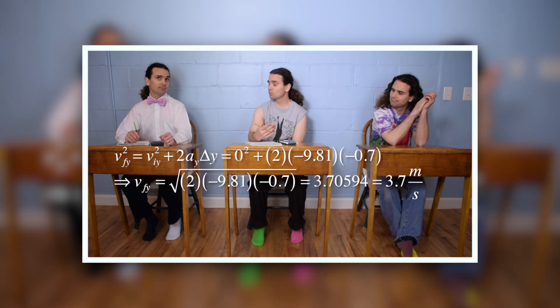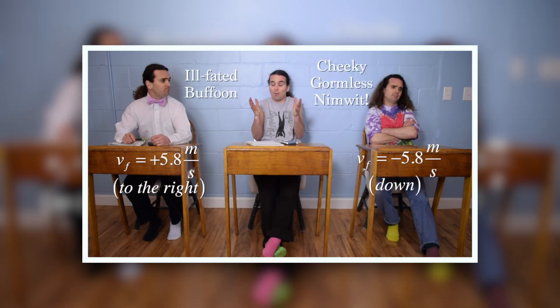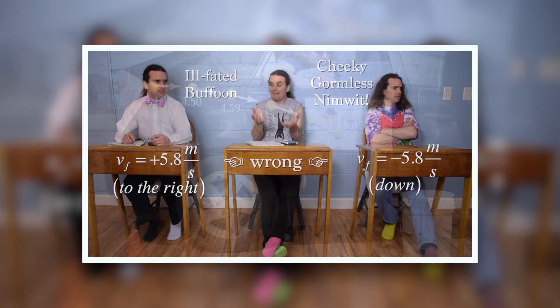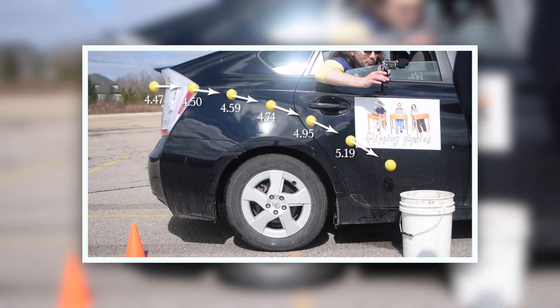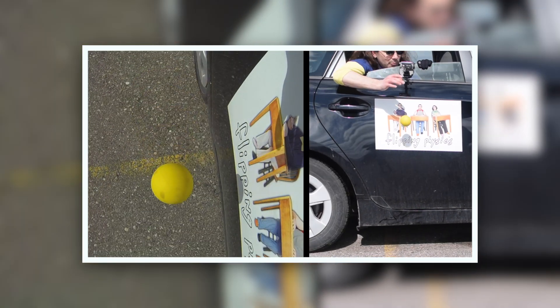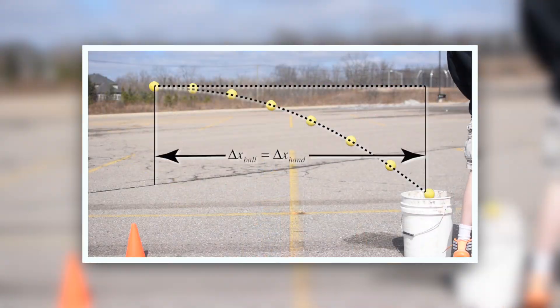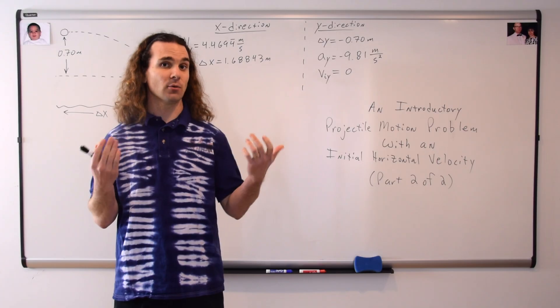Good morning. Today we're going to continue working on an introductory projectile motion problem where the object has an initial velocity that is entirely horizontal. This time, we're going to determine the final velocity of the ball right before it lands in the bucket. Here we go.